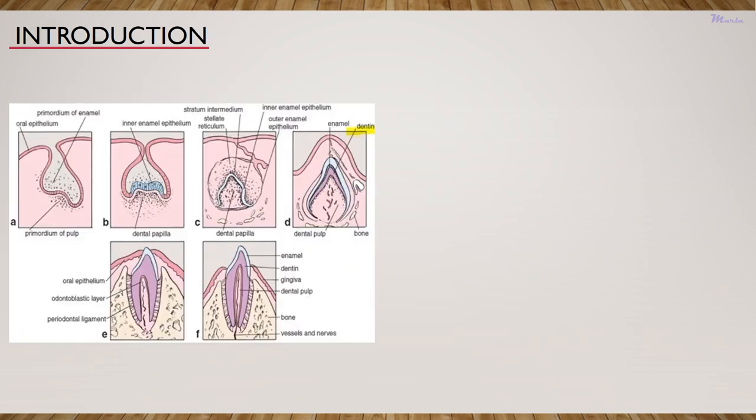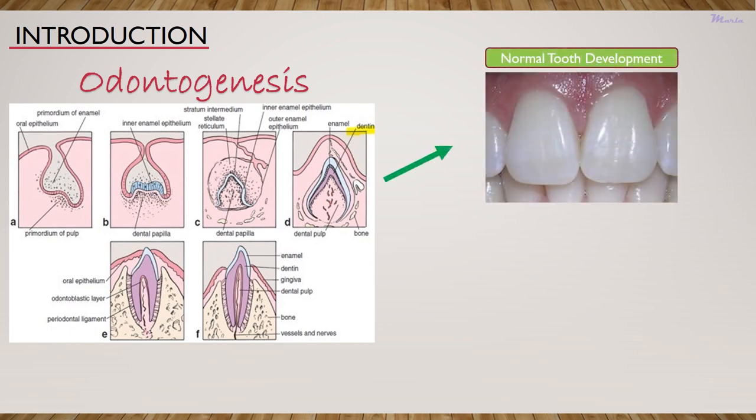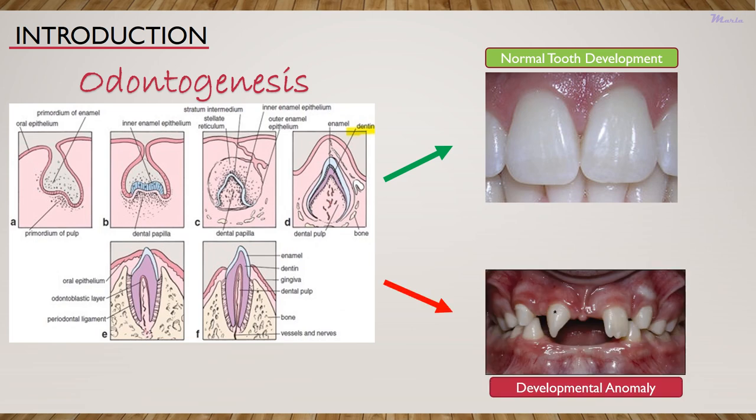I hope all of us remember the image shown here. This shows the various stages of odontogenesis wherein the dental lamina undergoes a series of changes to give rise to the enamel organ, which ultimately leads to the normal development of the tooth. However, under certain circumstances, this process of odontogenesis undergoes disturbances, including severe infection, exposure to toxic levels of chemicals or medications, and localized trauma to the area of development, leading to a variety of developmental anomalies.